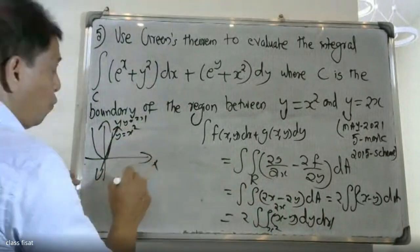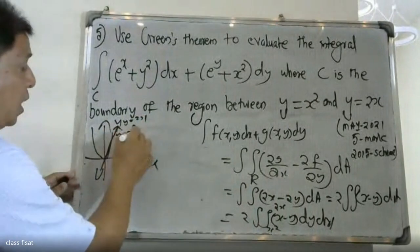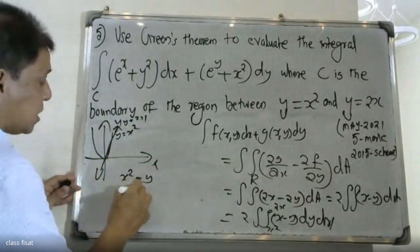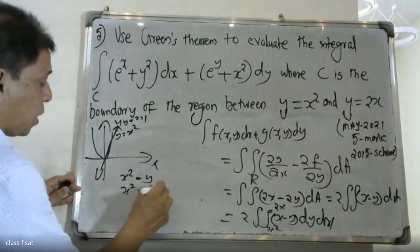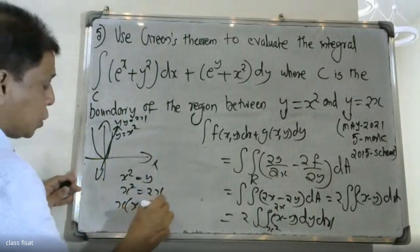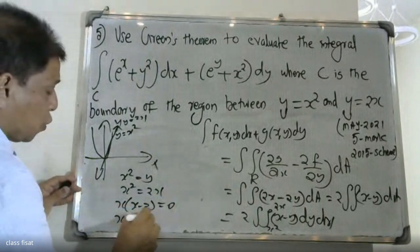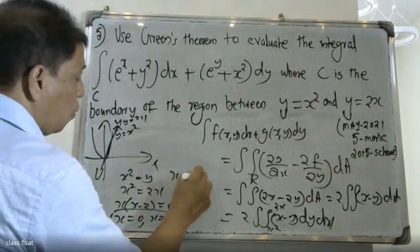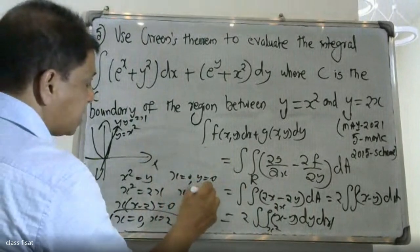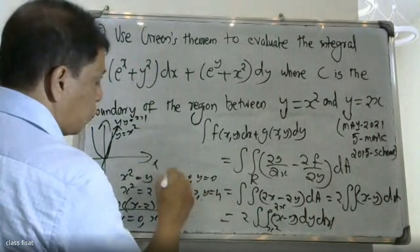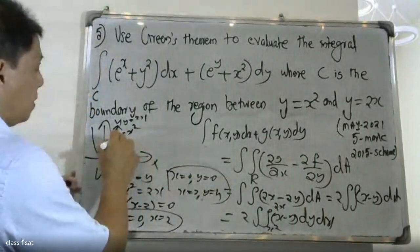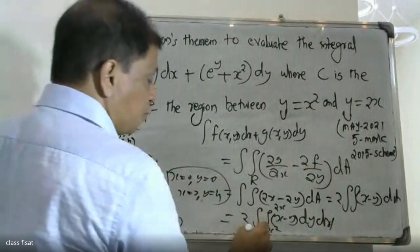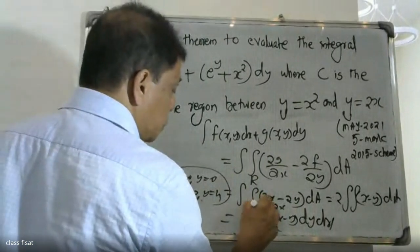The line is y equal to 2x and the parabola is y equal to x squared. Setting x squared equal to 2x, we get x squared minus 2x equal to 0, so x minus 2 equal to 0. Thus x is 0 and x is equal to 2. When x equals 2, y equals 4. So x varies from 0 to 2.